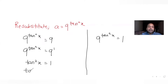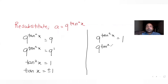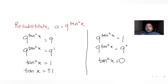For tan²x = 1, tan x = +1 or -1. For 9^(tan²x) = 1 = 9^0, we get tan²x = 0, so tan x = 0. This gives three values of tan x: -1, 0, and 1.